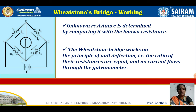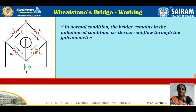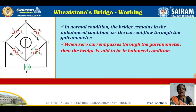The Wheatstone bridge works on the principle of null deflection — the ratio of their resistances are equal and no current flows through the galvanometer. In normal condition, the bridge remains in the unbalanced condition, meaning current flows through the galvanometer because there is a potential difference between B and D. When zero current passes through the galvanometer, the bridge is said to be in balanced condition.